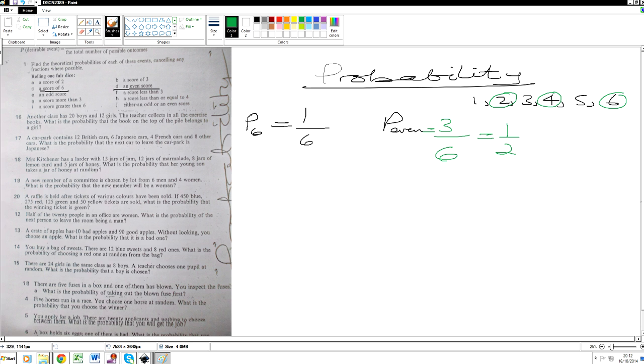And so on and so on. Question number 17. A car park contains 12 British cars, 6 Japanese cars, 4 French cars and 8 other cars. What's the probability the next car to leave the car park is Japanese? So probability of Japanese cars. How many Japanese cars are there altogether? Six.